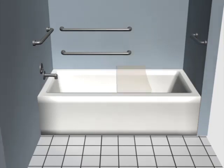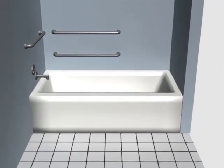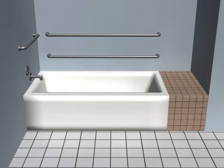If a permanent seat is provided, a grab bar on the head wall is not provided because it would interfere with the use of the seat. The dual grab bars on the back wall must extend to the edge of the seat so that they are usable from the seat. These grab bars facilitate entry into the tub from the seat.